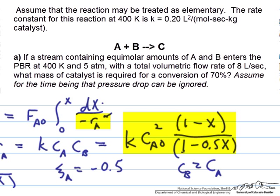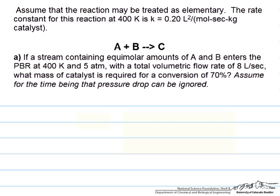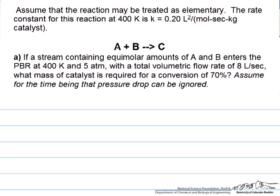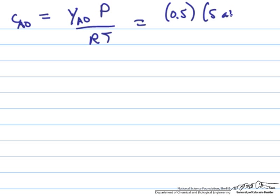We're going to need a couple of constants in order to do that that we don't have yet. One of those being the concentration, the inlet concentration of A, is not a given parameter. But we can use the ideal gas law again to get that. We have y_A naught times P divided by RT. y_A naught, as we just discussed, is 0.5, that the inlet mole fraction of A is one-half because we have an equimolar feed with B. The pressure is given as five atmospheres.